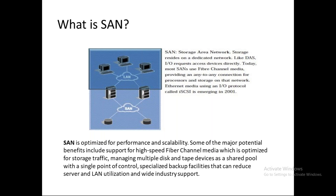SAN is the most commonly used type of storage variation at the industry level because it has good performance and good scalability. It uses a high-speed fiber channel medium which supports very low traffic overhead. The storage requests go through the fiber channel, so traffic is managed properly, increasing performance. Storage is centralized at a single shared point, and all devices on the same network can access it.